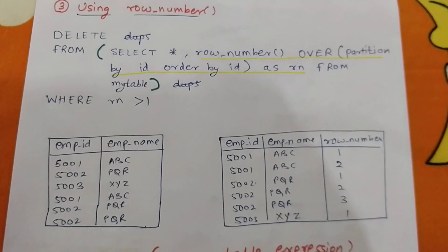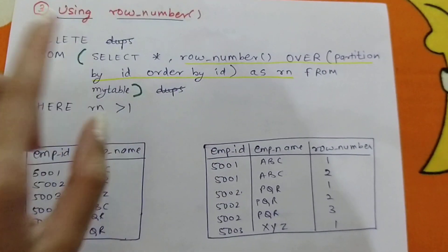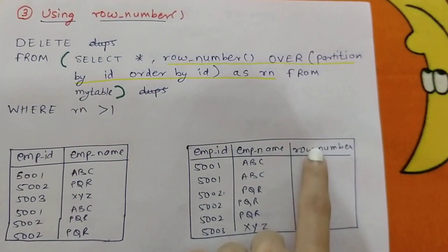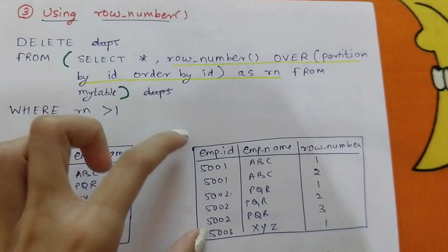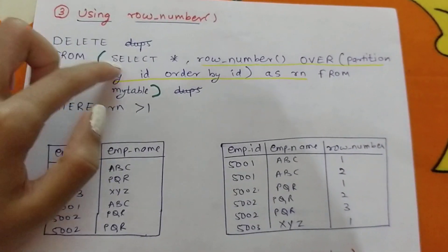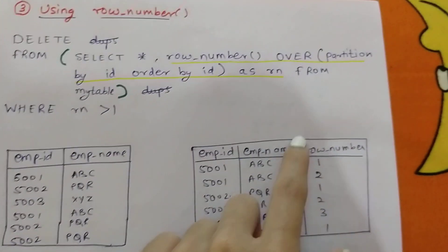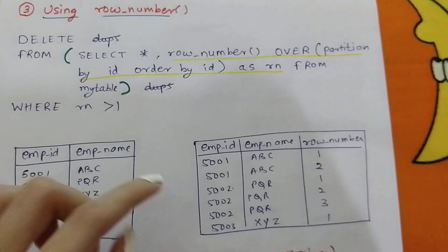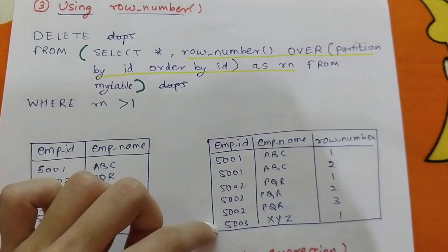The outer query then does: DELETE FROM (inner query) WHERE rn > 1. Wherever rn is greater than 1 — meaning row numbers 2 and 3 — those rows are deleted. We're left with only one row each for 5001, 5002, and 5003, which removes all duplicate items.